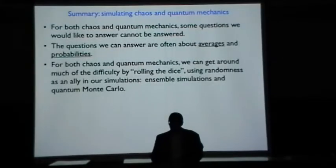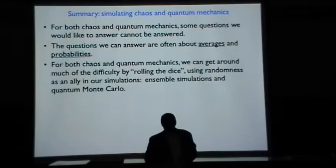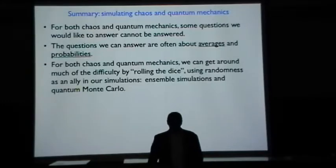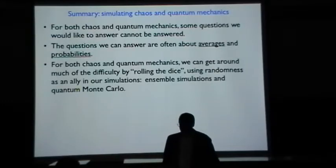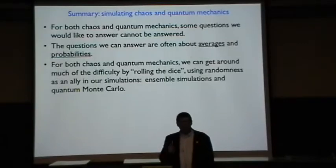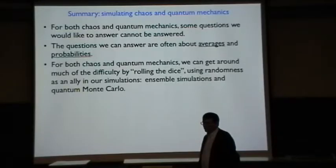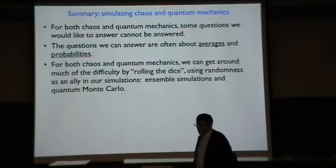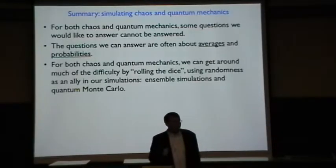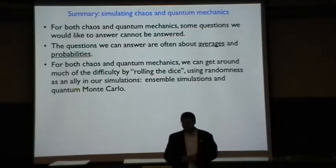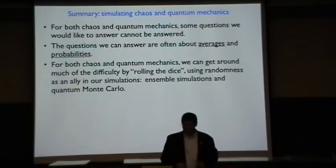Summary. Simulating chaos and quantum mechanics. For both, there are some questions that we would like to answer, but we just can't, and we'll never be able to. The questions that we can answer are often about averages and probabilities. For both chaos and quantum mechanics, we can get around much of the difficulty by rolling the dice and by using randomness as an ally in our simulations through ensemble simulations and quantum Monte Carlo.